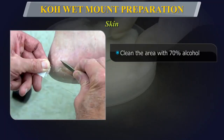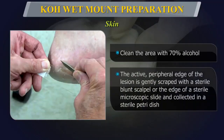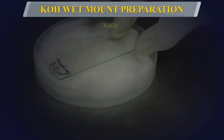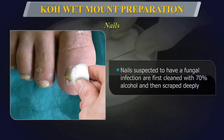For skin specimens, clean the area with 70% alcohol. The active peripheral edge of the lesion is gently scraped with a sterile blunt scalpel or the edge of a sterile microscopic slide and collected in a sterile petri dish. The sample can also be collected directly onto a sterile microscopic slide.